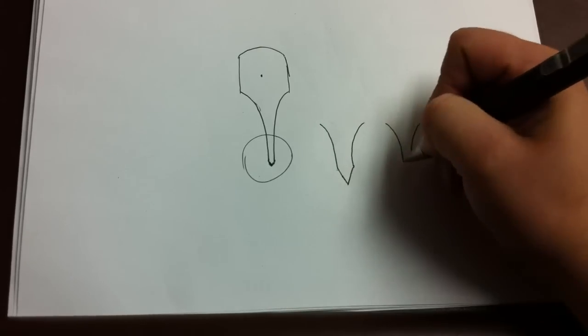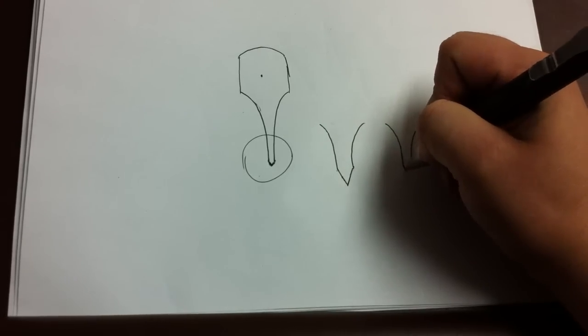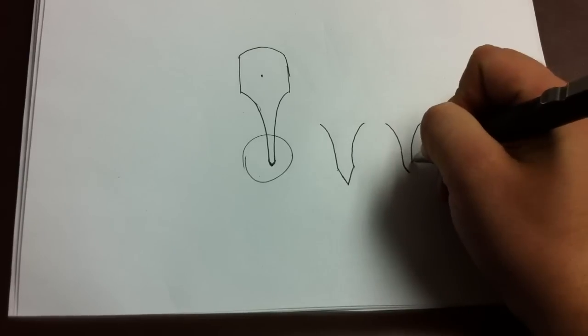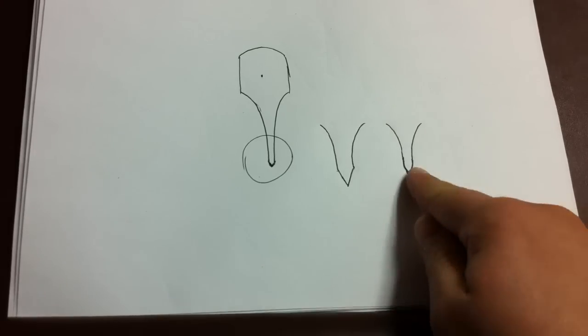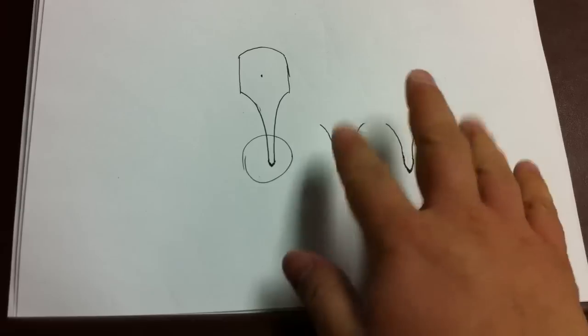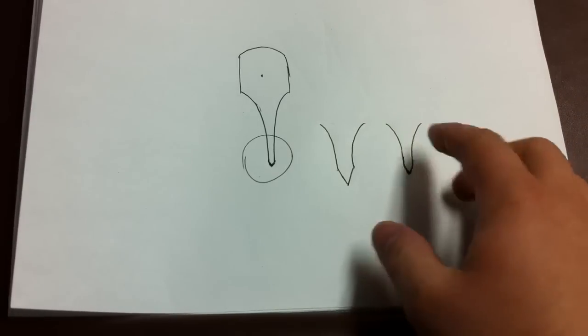You have to pardon my drawing, but hopefully this will make sense to you. But Sebenzas, they are sharpened like this, but then when Chris Reeve's crew runs them on the belt, they get convexed during the polishing process.